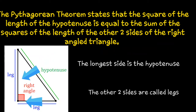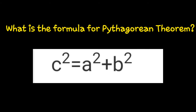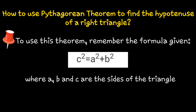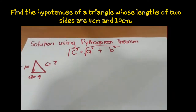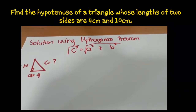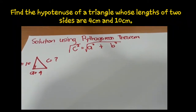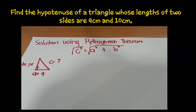Let's get started. Let's work on the solution for problem number one. We will be using the Pythagorean theorem, which states that to get the hypotenuse, c squared is equal to a squared plus b squared.